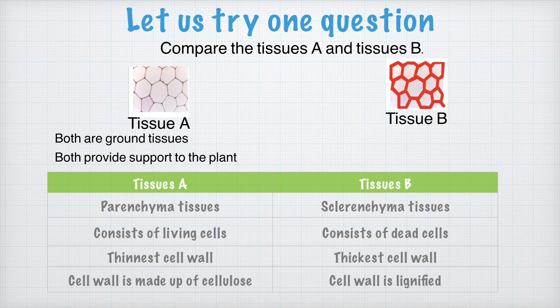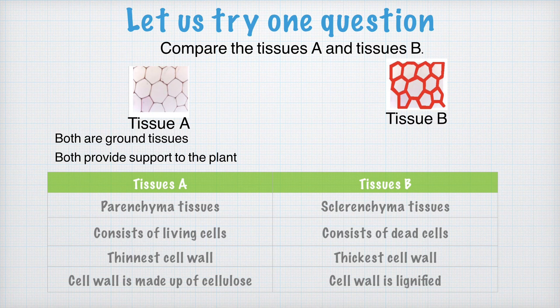For the comparison, we need similarities: both are ground tissues and both provide support to the plant. For the differences: tissue A is parenchyma tissue, tissue B is sclerenchyma tissue. Tissue A consists of living cells; tissue B consists of dead cells. Tissue A has the thinnest cell wall; tissue B has a thicker cell wall. Tissue A's cell wall is made up of cellulose, whereas tissue B's cell wall has lignin — it is lignified.